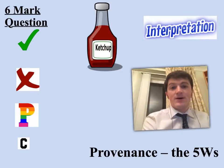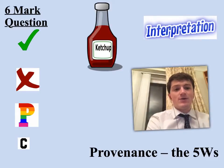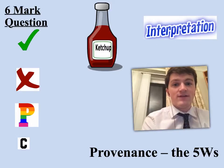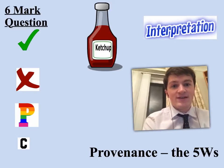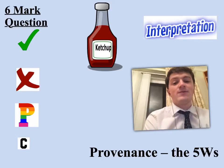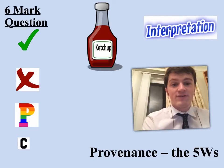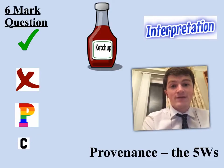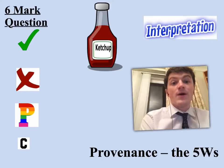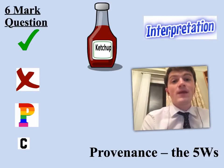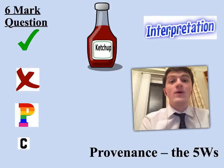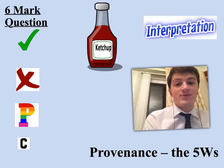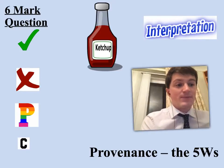The six-mark question is slightly trickier than the four-mark question, but you get a source and an interpretation with the source. Your task is to say why you agree, say why you disagree, discuss the provenance — that is the five W's — and talk about why they affect the source. So why has the source been made? Why does that make it less reliable or more reliable? And ultimately, a very small conclusion — two sentences to wrap up your answer.